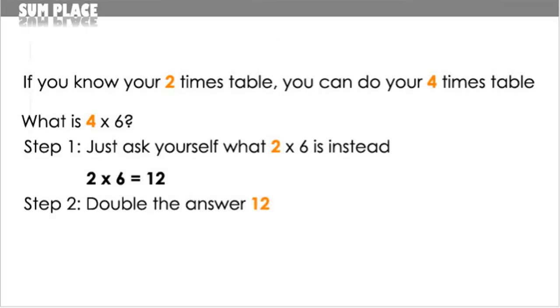Step 2: just take the answer that you got in step 1, which is 12, and double it. Double 12, which is the same as multiplying it by 2, equals 24. 12 times 2 equals 24, and 24 is your answer. So 4 times 6 equals 24.